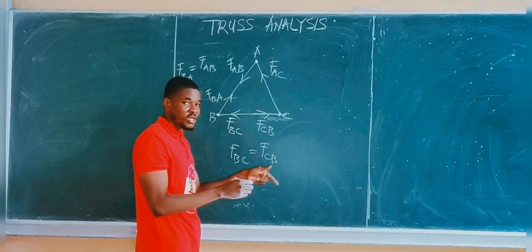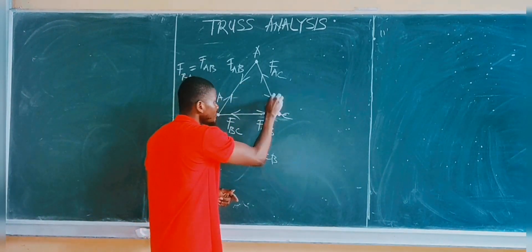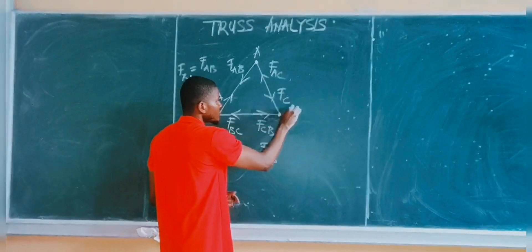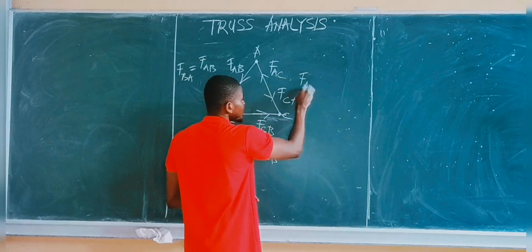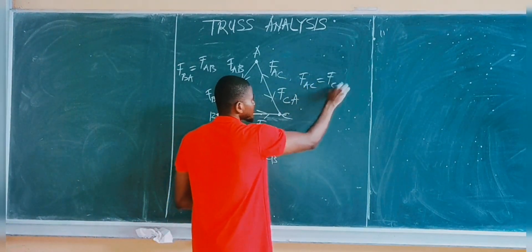So it must always point towards the joint. So we have this, and this is simply the force at joint C relative to joint A. But these two forces, FAC is equal to FCA.